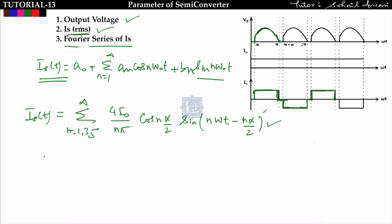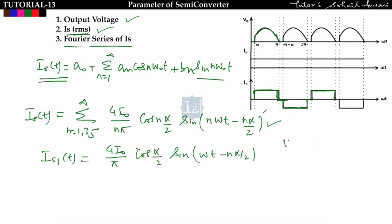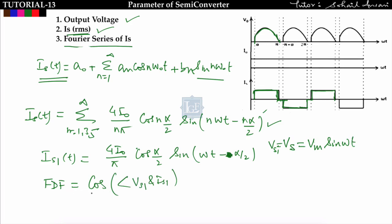Once the Fourier series is known, putting n = 1 gives the fundamental component: is1(t) = (4I0/π)·cos(α/2)·sin(ωt − α/2). The source voltage is vs = Vm·sin(ωt), which equals vs1 since no harmonics are present in the source voltage. The fundamental displacement factor (FDF) is the cosine of the angle between vs1 and is1, which is α/2. So FDF = cos(α/2).